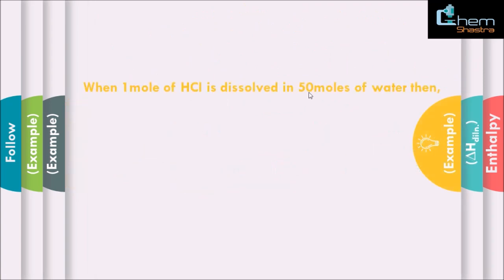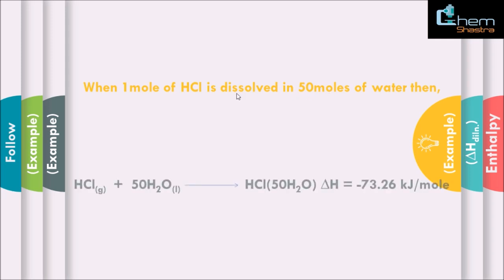Let's talk about the example. When one mole of HCl in the gaseous state is dissolved in 50 moles of water in the liquid state — one mole of HCl is 6.022 × 10²³ molecules of HCl, and 50 moles of water is 50 × 6.022 × 10²³ molecules of water, which roughly comes out to about 3.00 × 10²⁵ molecules of water. So I am adding one mole of HCl to 50 moles of water.